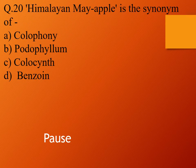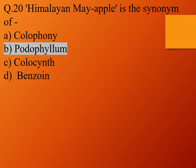Question 20. Himalayan may apple is the synonym of: option A, colophony; option B, podophyllum; option C, colocynth; and option D, benzoin. The right answer is option B, podophyllum. So Himalayan may apple is the synonym of podophyllum.